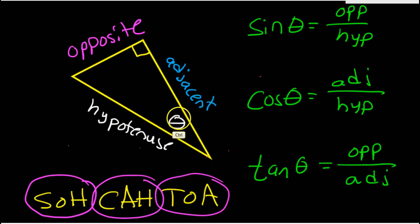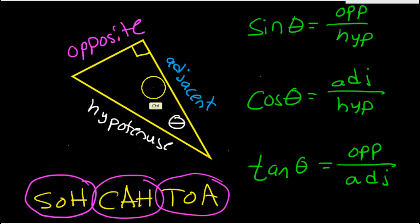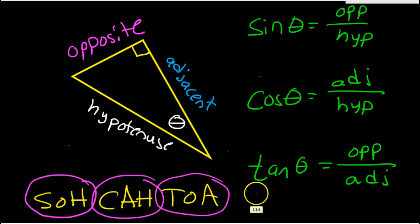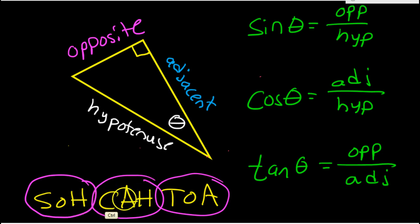These other two words depend on which angle you choose. If we look at angle theta, the leg right next to it is the adjacent leg, and the leg across from it is the opposite leg. So sine of theta is opposite over hypotenuse, cosine theta equals adjacent over hypotenuse, and tangent theta equals opposite over adjacent. This can be abbreviated using the magical word SOHCAHTOA — SOH stands for sine equals opposite over hypotenuse, CAH for cosine equals adjacent over hypotenuse, and TOA for tangent equals opposite over adjacent.